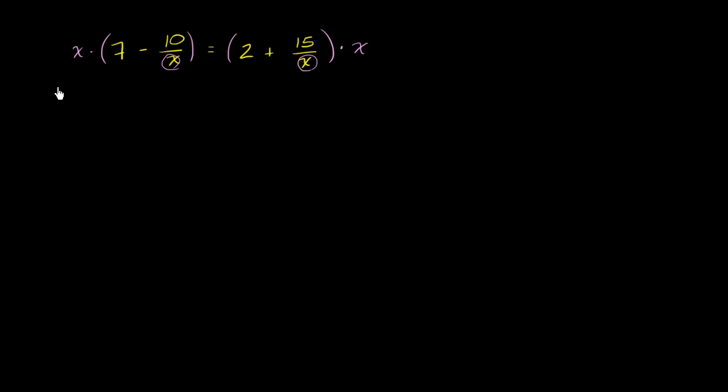Well, we distribute the x. We get x times 7 is 7x. And then x times negative 10 over x, well, that's just going to be negative 10. So you get negative 10 right over there. So the left-hand side simplifies to 7x minus 10.